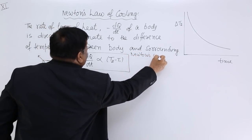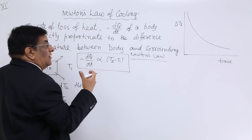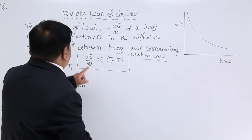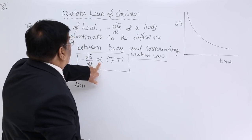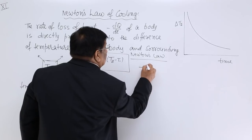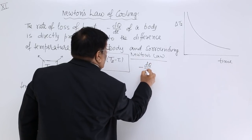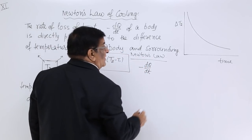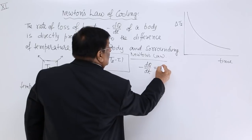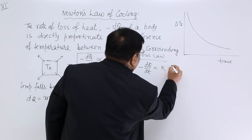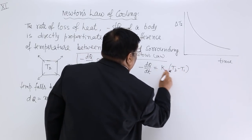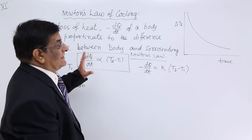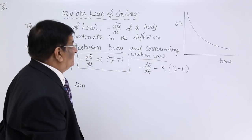This is Newton's Law. With this, we can make further derivations. If we want to make an equation, then minus DQ by DT, the rate of radiation of heat, is equal to K times (T2 minus T1), where K is a positive constant.